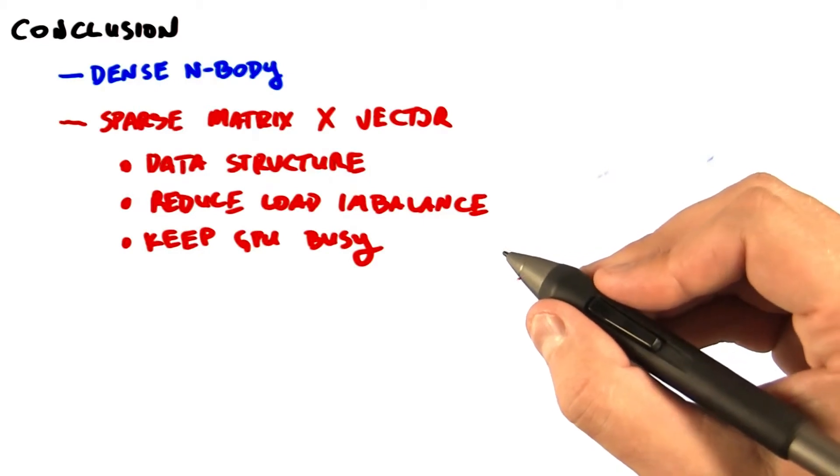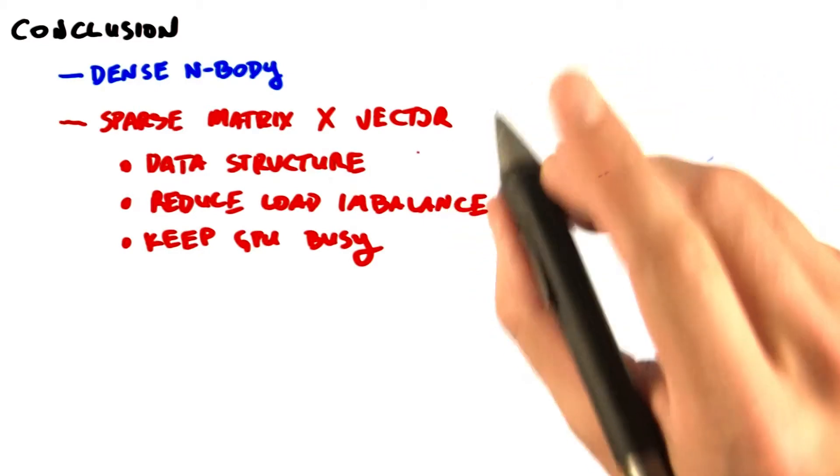Sparse matrix vector multiply. The right data structure can make a big difference.